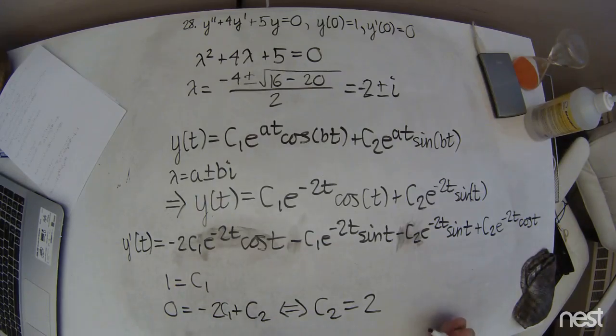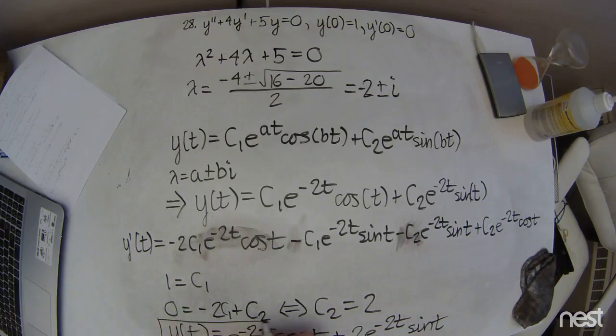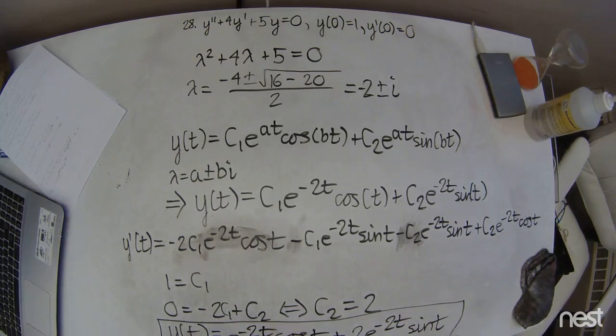So that worked out nicely. So now our final solution is going to be y(t) equals e to the negative 2t cosine of t plus 2e to the negative 2t sine of t. And that is it.